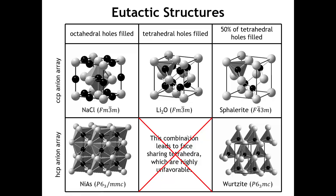We can also get many structures by filling only some of the holes. Filling half of the tetrahedral holes in a cubic close-packed array gives the sphalerite (zinc blende) structure, which is very important for many semiconductors. Filling half of the tetrahedral holes in an HCP array gives the wurtzite structure.